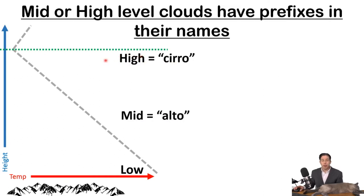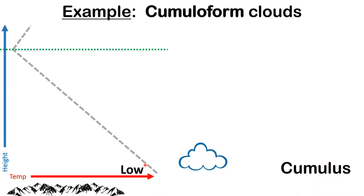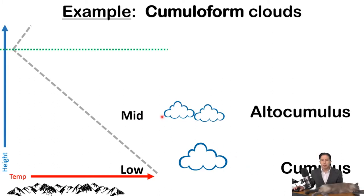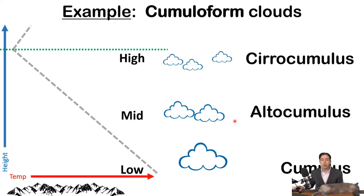If we have a cloud in the upper part of the troposphere, we call it a high cloud, and it will start with the prefix cirro. If it's in the middle, it starts with the prefix alto. If it's down low, it does not have a prefix at all. For example: a puffy cumuliform cloud that's down low is called cumulus. Move it to the middle of the troposphere and add the prefix alto — it becomes altocumulus, and it looks smaller because it's higher up. Move it all the way to the top and it's called cirrocumulus, smaller still.